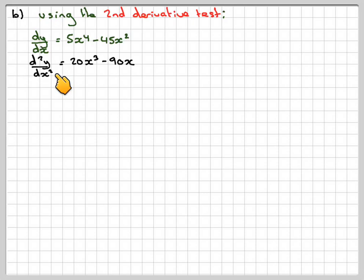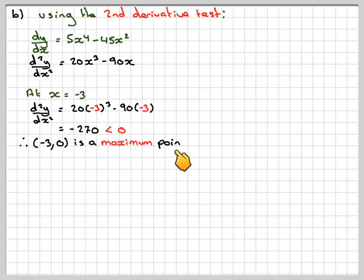At x equals minus 3, the second derivative will be 20 times minus 3 cubed minus 90 times minus 3, which is minus 270. That is negative. Therefore, we can say that (-3, 0) is a maximum point.